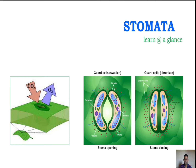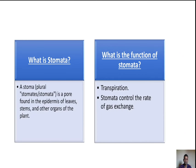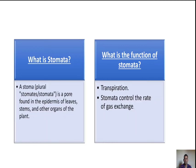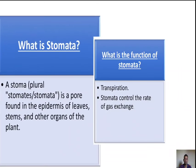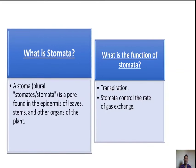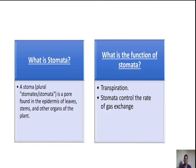First of all, we have to know what is stomata. Stomata is a plural; the name is derived from 'stoma.' Stoma means a pore which is formed by two identical guard cells. Stomata are found in the epidermis of leaves, stems, and other organs of the plant.